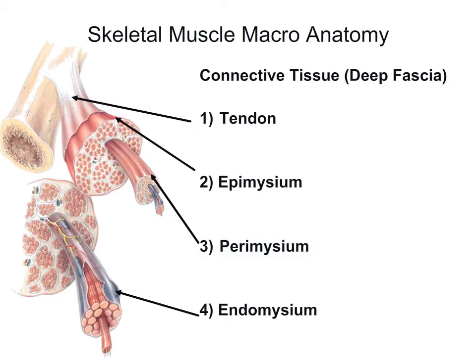If we look within a fascicle and pull out an individual cell, we see it is covered with another connective tissue called endomycium. So endomycium covers the cell, perimycium covers the fascicle, and epimycium covers the entire muscle. The whole purpose of these connective tissues is to give structure and support to the muscle — like a fibrous connective tissue skeleton found within the muscle.